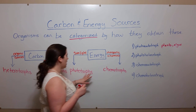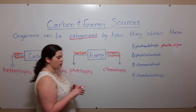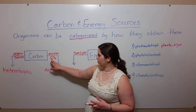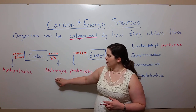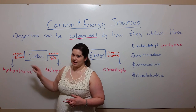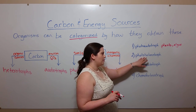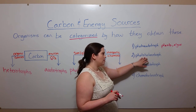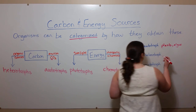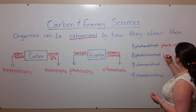Photoheterotrophs are still getting their energy from sunlight, but rather than using environmental carbon dioxide, they're getting their carbon from organic sources. These include a couple of types of bacteria that most people haven't heard of, called purple and green non-sulfur bacteria.